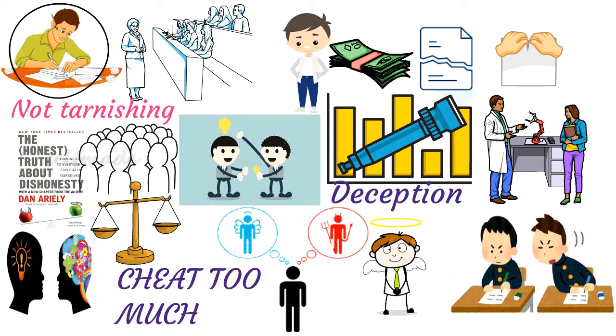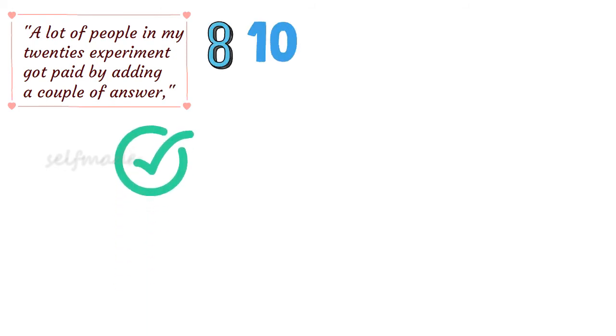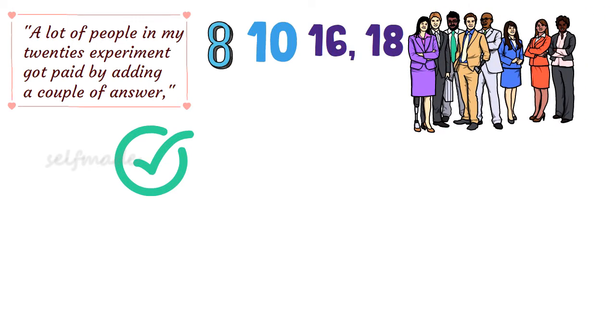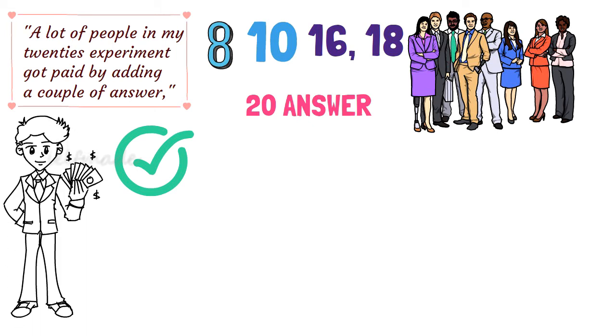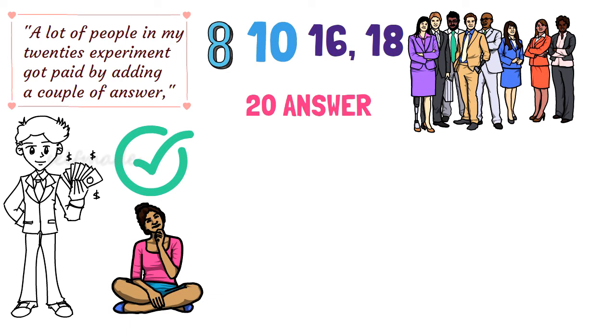A lot of people in the 20-question experiment got paid by adding a couple of answers. However, they all said that 8 or 10 answers were correct. Most do not say 16 or 18, and very few people say 20 answers are correct. What do you know from this? There are very few criminal mindsets in the society.